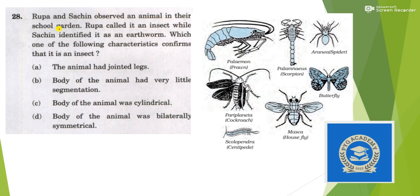Next: Rupa and Sachin observed an animal in their school garden. Rupa called it an insect while Sachin identified it as an earthworm. Which characteristic confirms that it is an insect? One thing common in insects is jointed legs. They also have a segmented body — yes, but you will also find a segmented body in earthworms. Body cylindrical and bilaterally symmetrical — earthworms also have these features. But if it is an insect, it must have jointed legs. So the answer is option A.